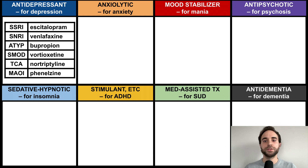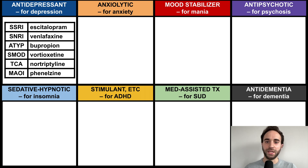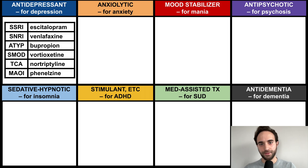There are also two older classes of antidepressants: the tricyclic antidepressants, or TCAs, and the monoamine oxidase inhibitors, or MAOIs.